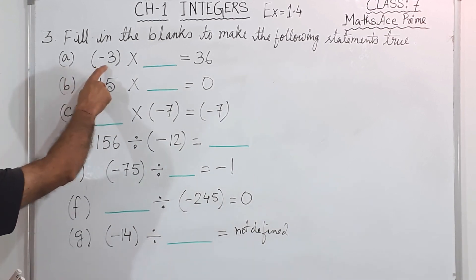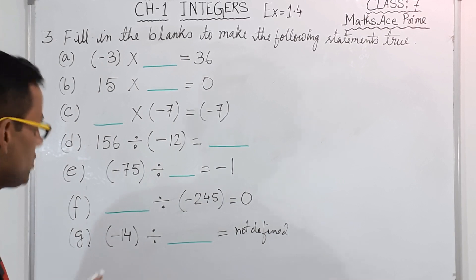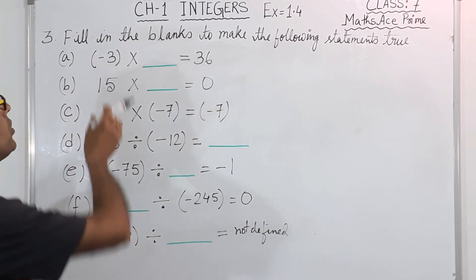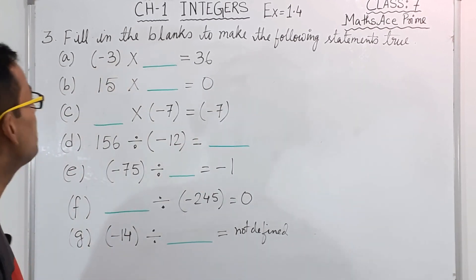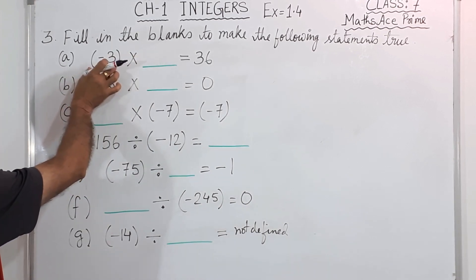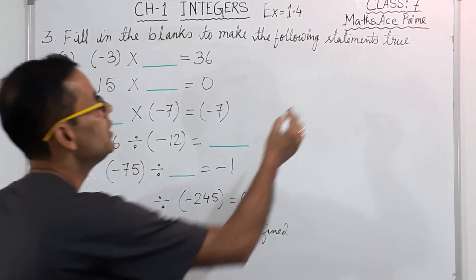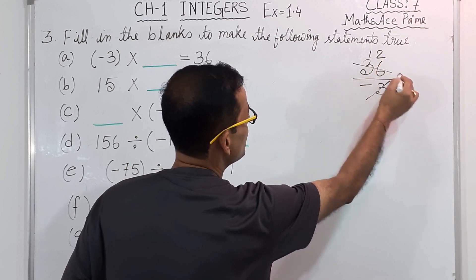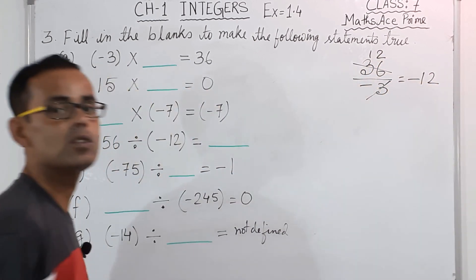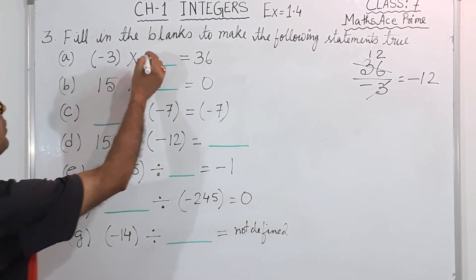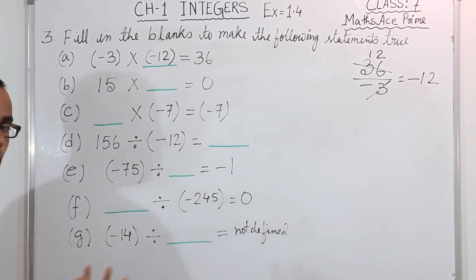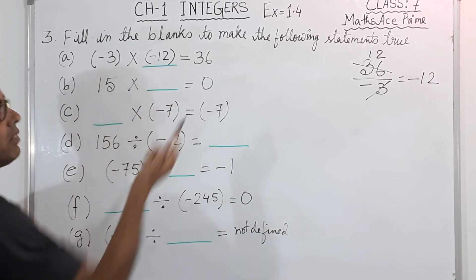First one: minus 3 into what will be 36. If minus 3 transfers to that side, it becomes division. So 36 divided by minus 3 — 3 ones are 3, 3 twos are 6 — you get minus 12. So if you multiply minus 12: minus into minus is plus, and 3 into 12 is 36.